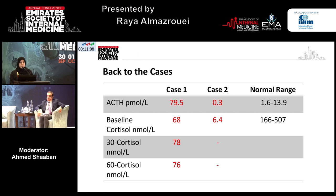Back to the cases: the first patient had a highly elevated ACTH with a low baseline cortisol, which justified the diagnosis of primary adrenal insufficiency. He also had failure of response to ACTH stimulation. The second case had low ACTH and low baseline cortisol, consistent with secondary adrenal insufficiency.